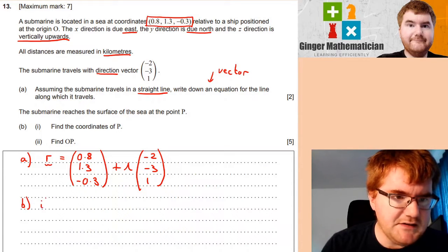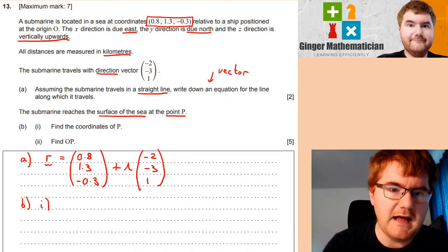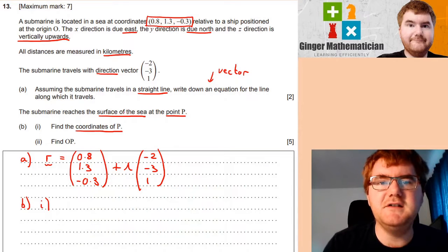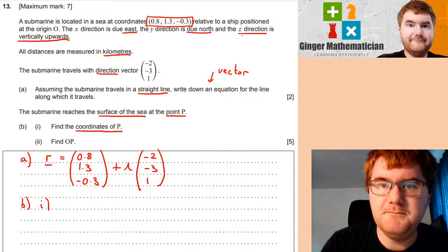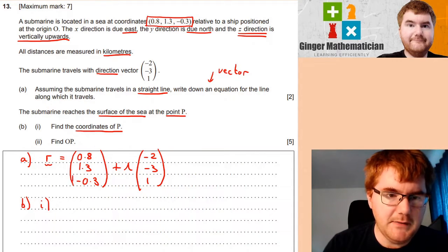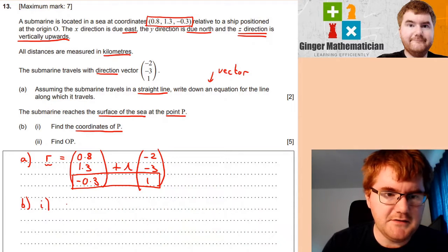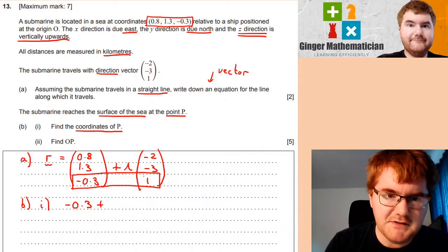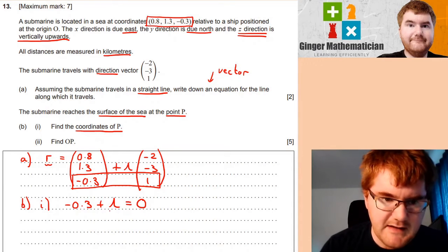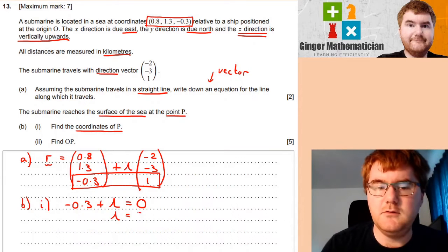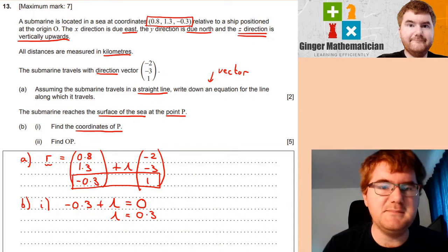Now we're going to go on to question B. The submarine reaches the surface of the sea at a point P. We need to find the coordinates of P. In order to reach the surface, we need to think whether the z direction needs to be 0. Notice it's the z direction that indicates it's vertically upwards. So we want the bottom part of our vector to be equal to 0. So I'm going to go -0.3 plus one lot of lambda equals zero.